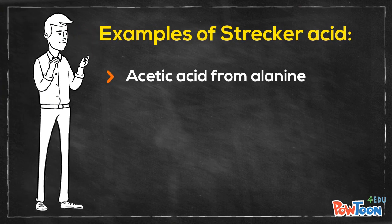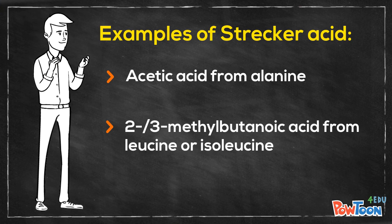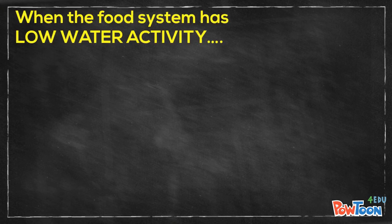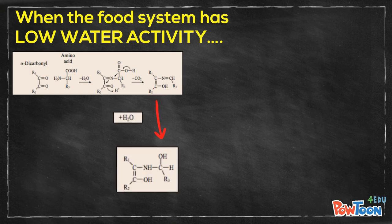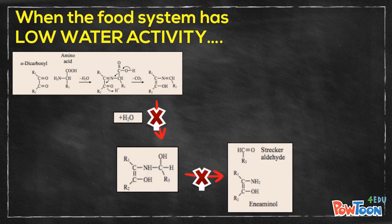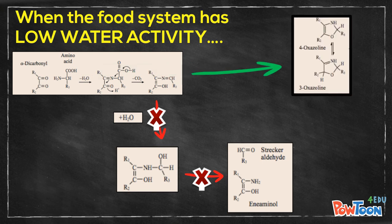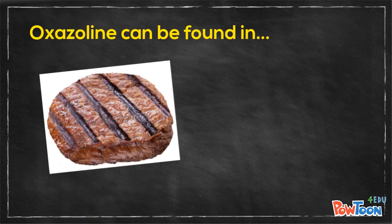Examples of Strecker acids are acetic acid from alanine, or 2,3-methylbutanoic acid from leucine or isoleucine. Another condition is when the food system has low water activity — the intermediate product prior to the release of Strecker aldehyde and aminoketones cannot be produced. The process eventually forms 4-oxazoline, which is in equilibrium with 3-oxazoline. However, Strecker aldehyde can be released from oxazoline upon addition of water. The formation of oxazoline is where Strecker degradation can be found in cooked meat and roasted peanut.